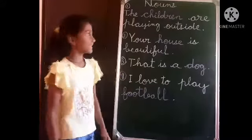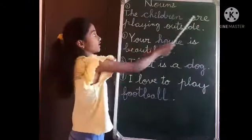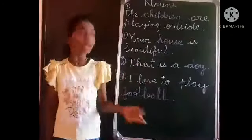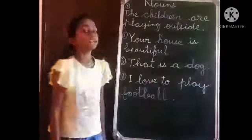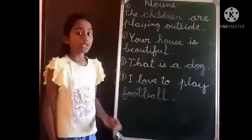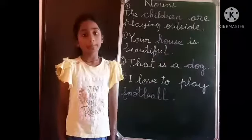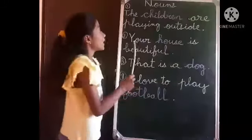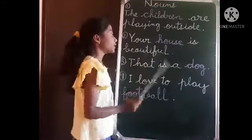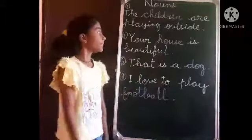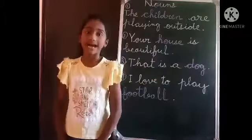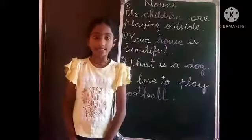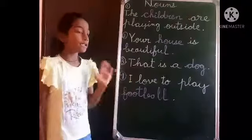The first example is: 'The children are playing outside.' Here, children is a noun used for names of people. Next example: 'Your house is beautiful.' Here, house is a noun that is used for names of place.